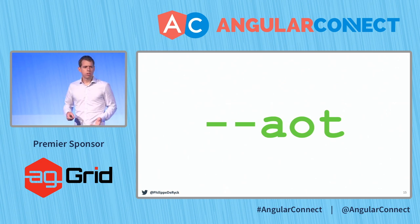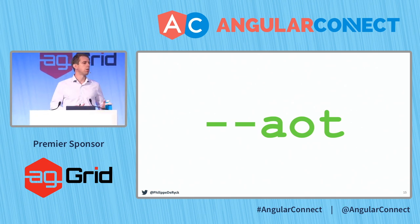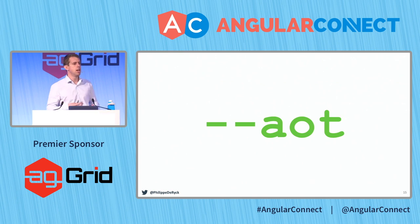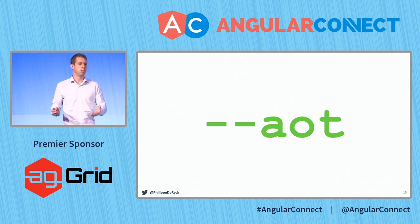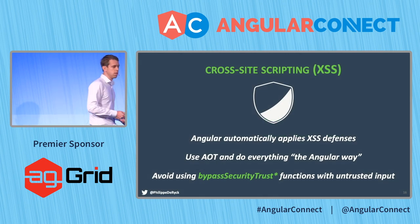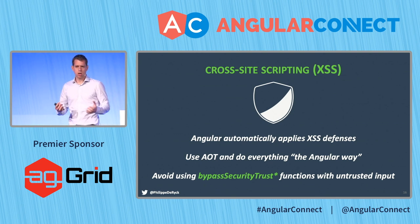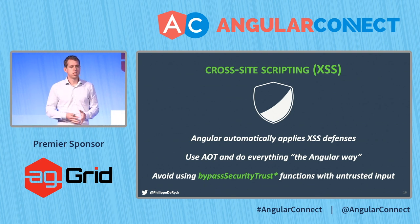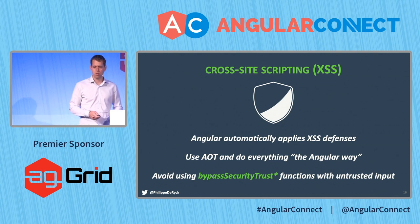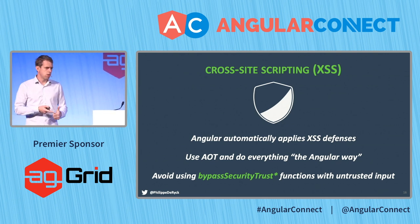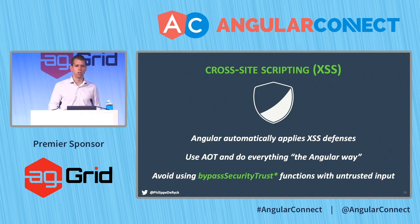Use AOT — it's going to be available in development mode automatically from the next version, as announced in the keynote this morning. It prevents some template injection attacks that existed in Angular 1, where there was no compilation of template code up front. There are a lot of benefits, and one of them is security. The takeaway: Angular automatically applies XSS defenses. All you need to do is follow the Angular way of doing things — don't try to fight or bypass Angular.